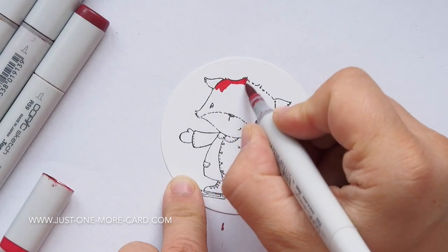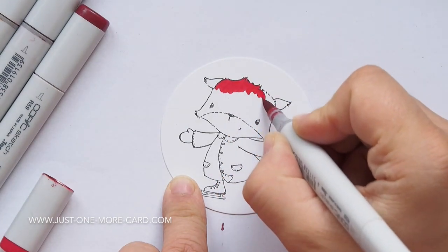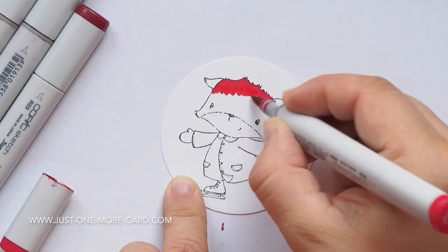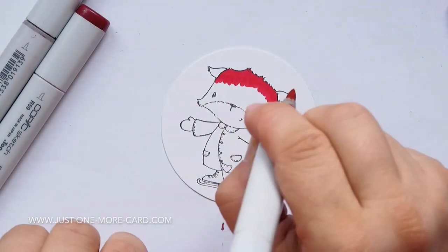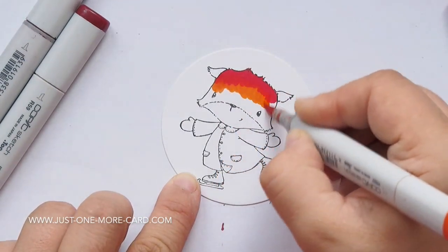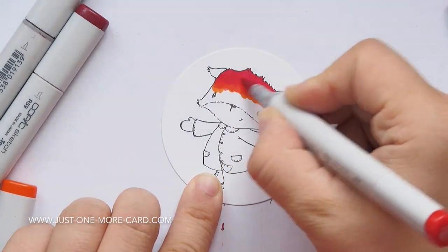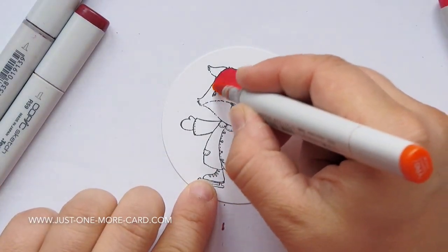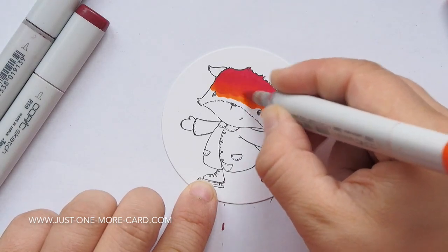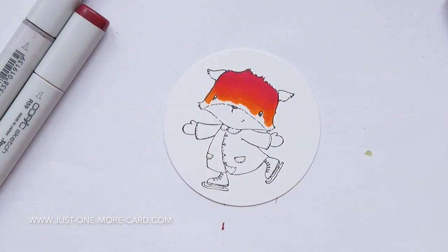Now for the coloring, I always like to color from dark to light. I started out by not using even the very darkest color but a mid-tone red color, and I'm blending towards a more orange tone because I wanted my fox not to be so red but more orange.